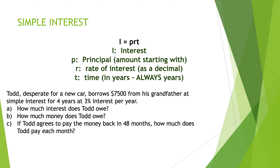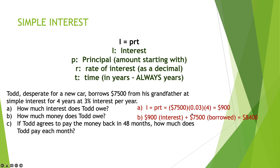Let's do part A. I equals PRT. The principal is $7,500 — that's how much he borrows. The rate is 3%, which converts to a decimal: 0.03. The time is 4 years. So: 7,500 times 0.03 times 4 equals $900. That's the interest he pays over four years. For the total amount owed, he owes the $900 interest plus the $7,500 he borrowed, which is $8,400.